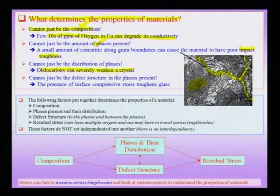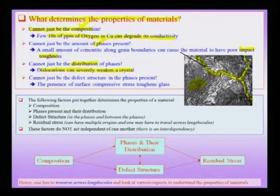This implies that I need to know the defects in the material apart from knowing the phases and their distribution. But should I stop here? Definitely not. The reason being that we know normal glass is very brittle and it fractures very easily — if any ball is thrown on a window pane glass it shatters easily. But we have another example known as toughened glass. Toughened glass consists of normal glass but with a certain distribution of residual stresses, specifically compressive residual stress on the surface, which helps to toughen the glass a lot.